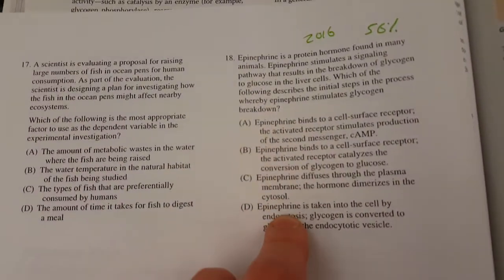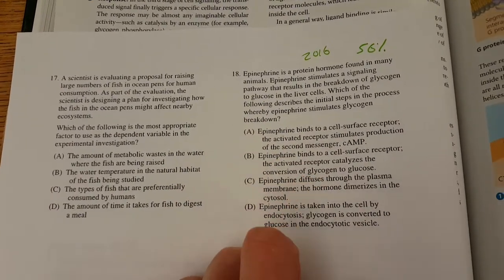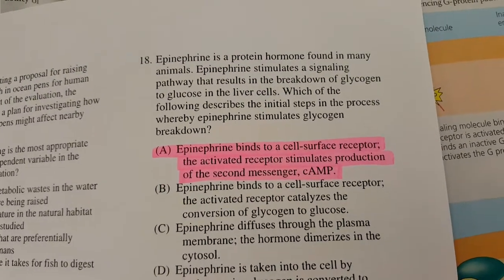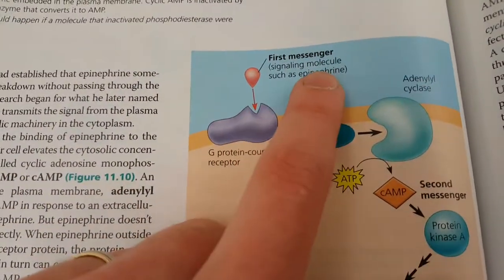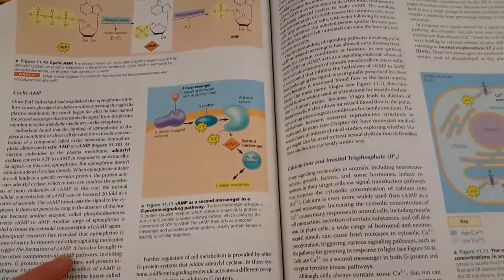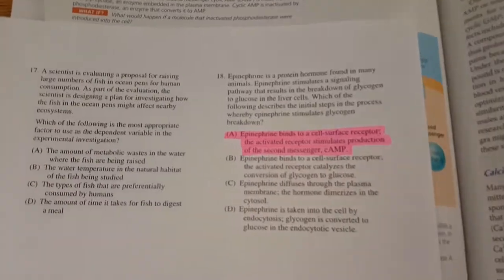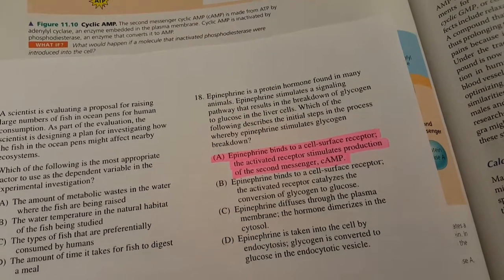So going back: D doesn't sound good; C we're shaky on because epinephrine isn't lipid-soluble; B is out because receptors don't actually act as the enzyme. That leaves us with answer A — epinephrine binds to the cell surface receptor, and the activated receptor stimulates production of the second messenger cyclic AMP. Going back to the textbook diagram, it actually says 'such as epinephrine' right there, and epinephrine is in fact the main signaling example used throughout chapter 11, Cell Communication. So that's the right answer and my breakdown of question 18 from the 2016 AP Biology exam. Thank you.